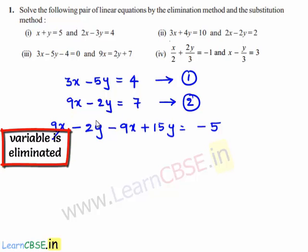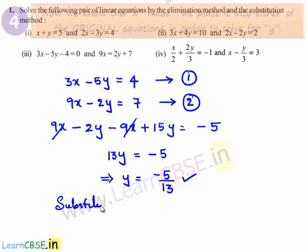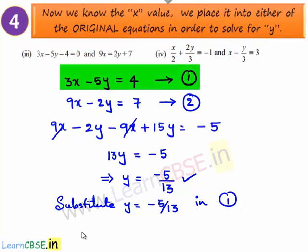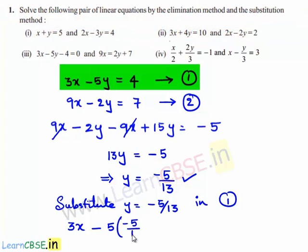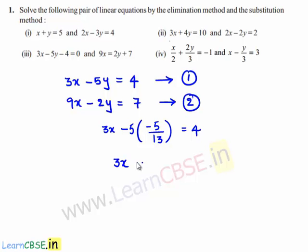Now plus 9x and minus 9x cancel, and minus 2y plus 15y is 13y, which equals minus 5. This gives y equals minus 5 by 13. We have found the value of y to be minus 5 by 13. Now let us substitute y equals minus 5 by 13 in equation number 1: 3x minus 5 times of minus 5 by 13 equals 4.